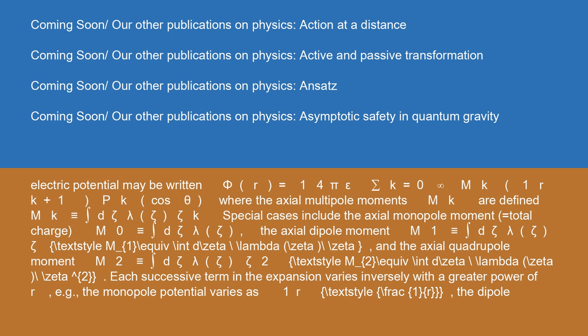Special cases include the axial monopole moment equal to total charge: M₀ ≡ ∫ dζ λ(ζ). The axial dipole moment m₁ ≡ ∫ dζ λ(ζ) ζ. And the axial quadrupole moment m₂ ≡ ∫ dζ λ(ζ) ζ².